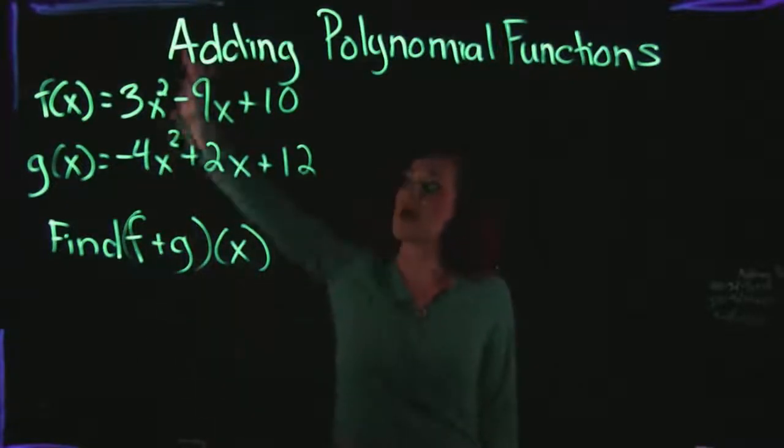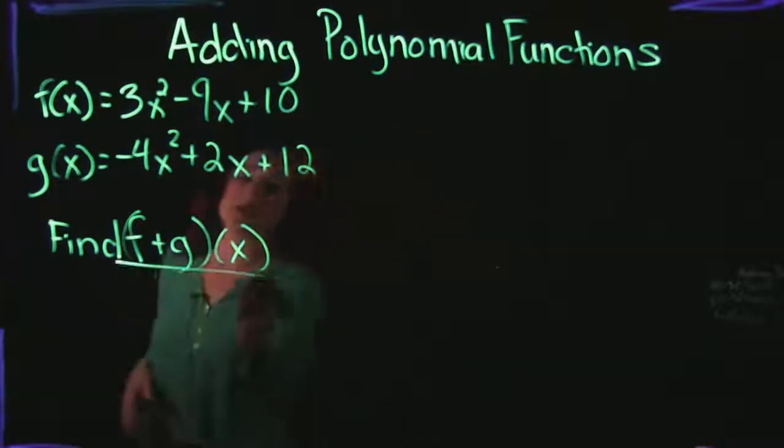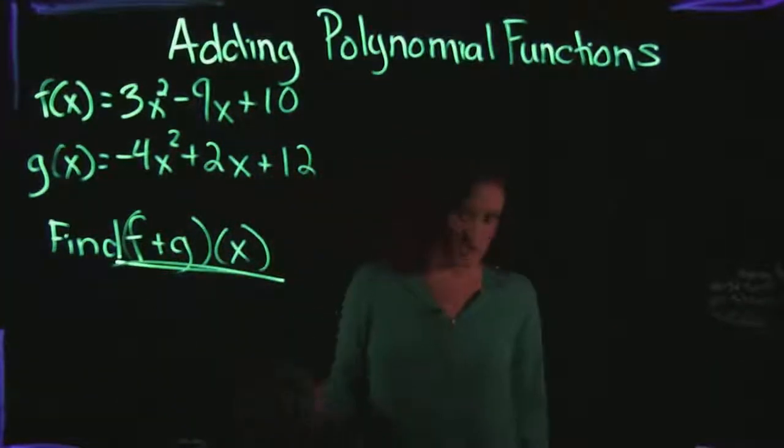So here on the board, I have f of x is equal to 3x squared minus 9x plus 10. And g of x is negative 4x squared plus 2x plus 12. And we are asked to find f plus g of x.